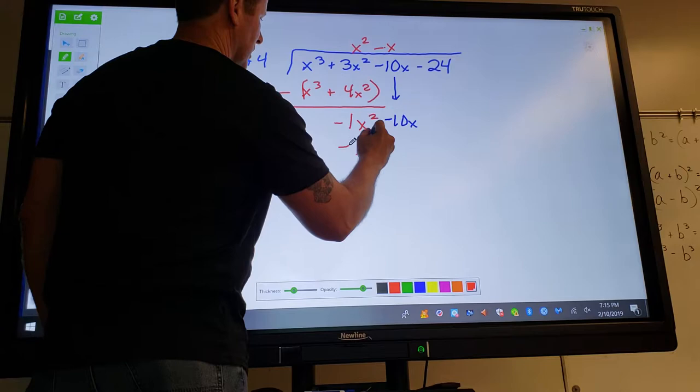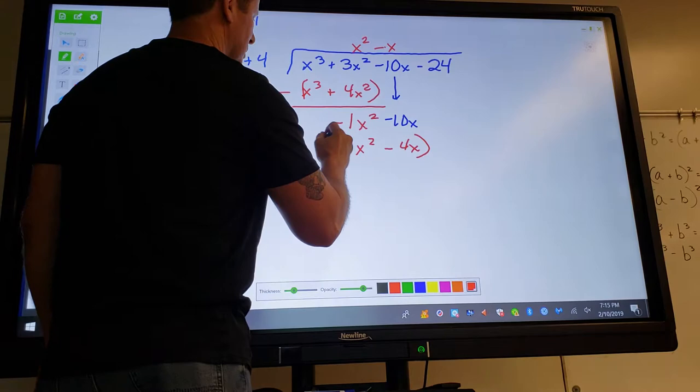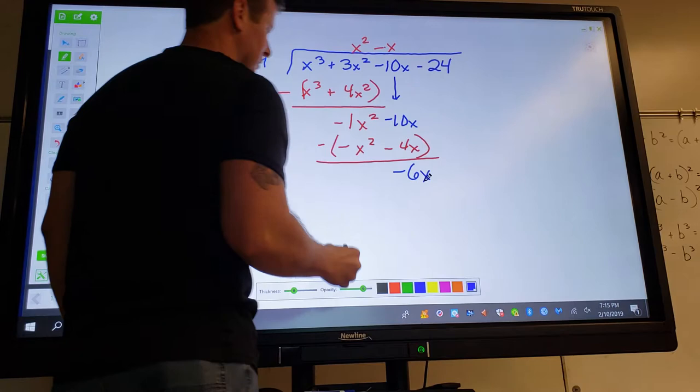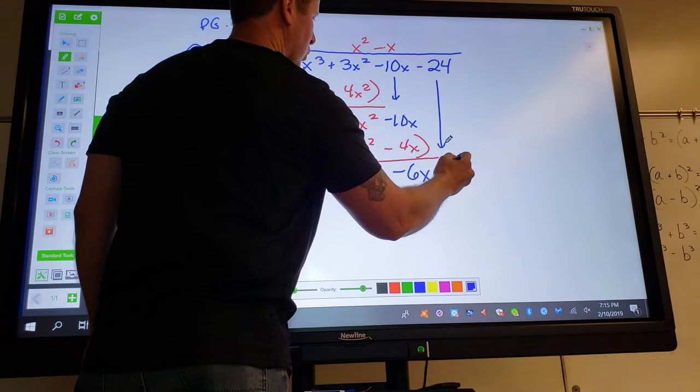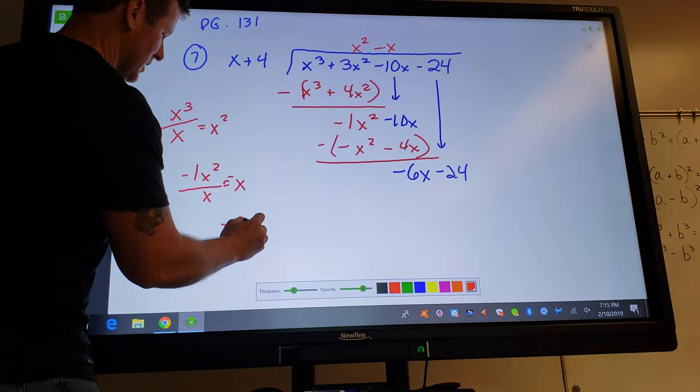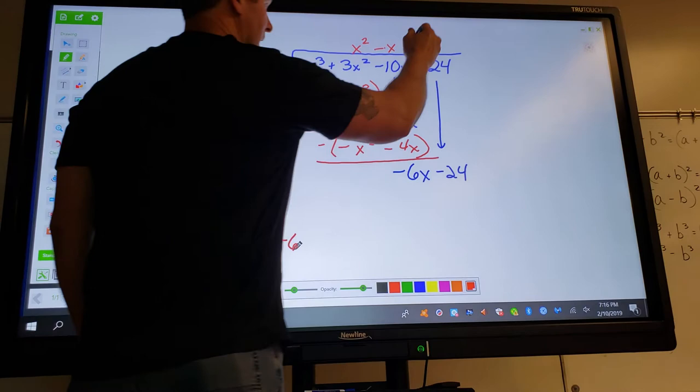And then subtract the quantities. If I do this math right, I should get negative six x because this changes to a positive four. This will always cancel. Bring down the negative 24 and repeat the process one more time. What is negative six x divided by x? And hopefully you said negative six.